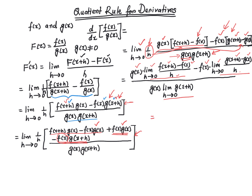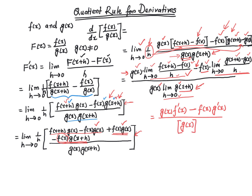If I write these things down and simplify, from the numerator I get g of x times f prime of x — the derivative of f — minus f of x times g prime of x, the derivative of g. In the denominator, since g is a continuous function, the limit as h approaches 0 of g of x plus h is just g of x. So I have g of x times g of x, which is g of x whole square. This is the derivative of uppercase F of x, which is the quotient f over g.